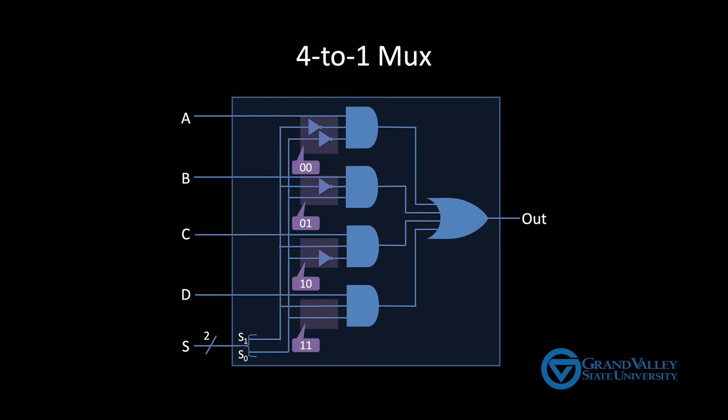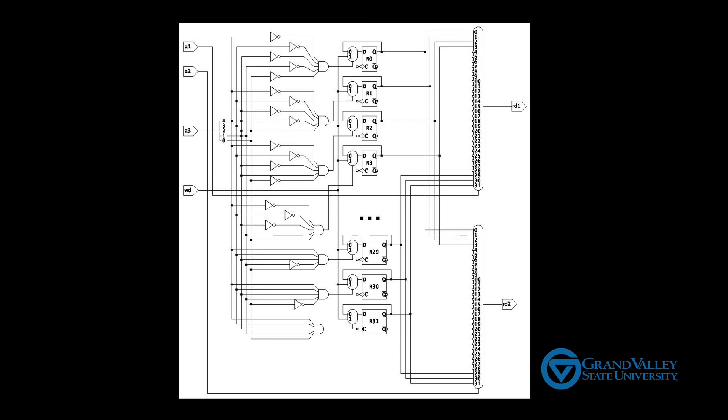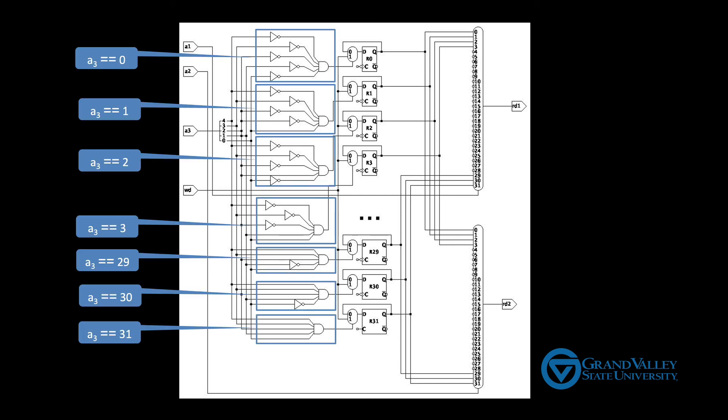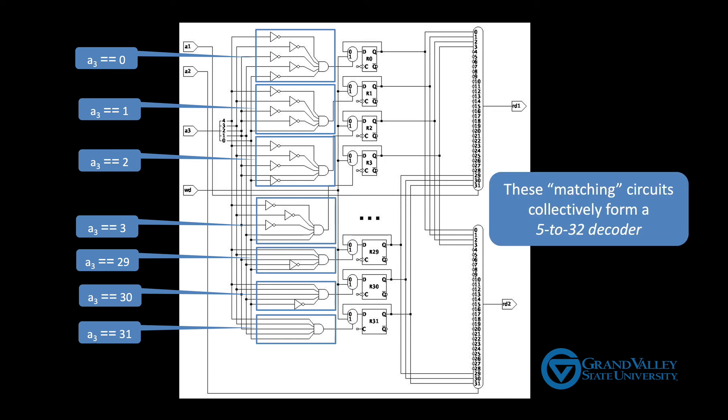If we apply this pattern to our register file, we get this. Here you can see the part of the circuit that matches the A3 input to the enable of the desired register. Normally when drawing this circuit, these gates would be abstracted away into a sub-circuit called a decoder. Also the registers would typically be shown with an enable input instead of explicitly showing the MUX that controls whether D or Q is fed into the register.